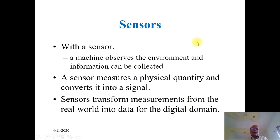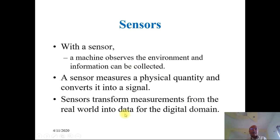What are the capabilities of sensors? With a sensor, a machine observes the environment and information can be collected or acquired. A sensor measures a physical quantity and then converts this physical quantity into a signal — maybe an electrical signal or optical signal and so on. Sensors transform measurements from the real world into appropriate data for the digital domain.